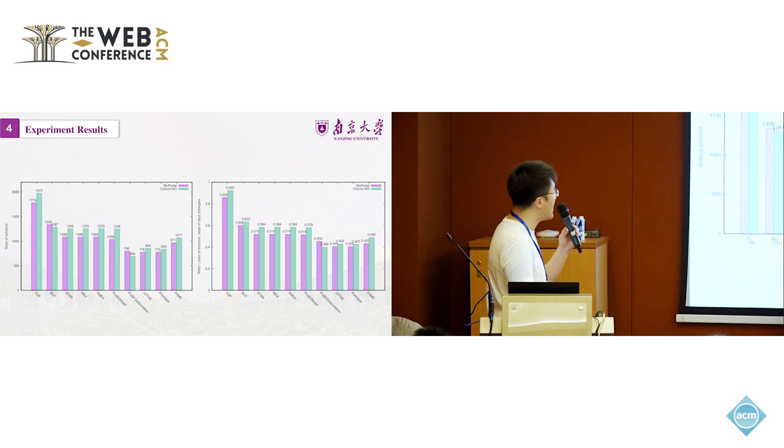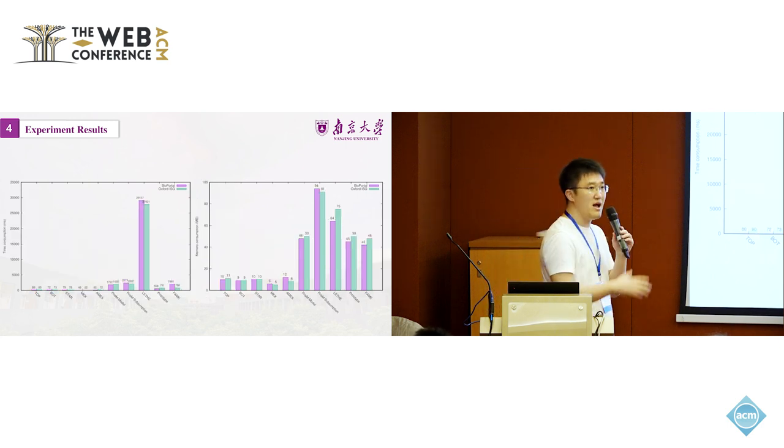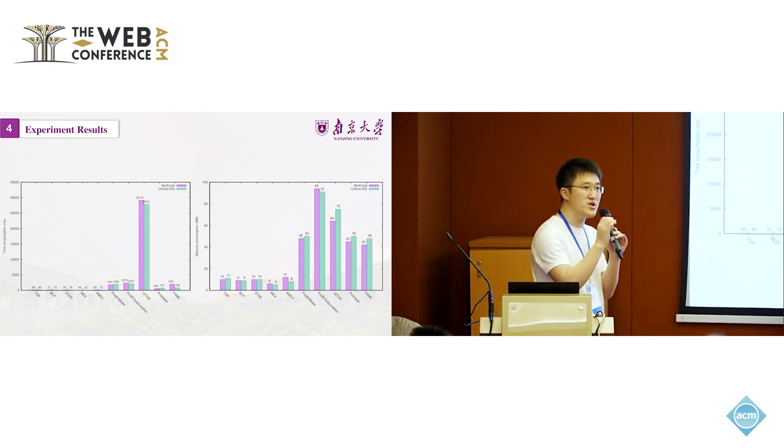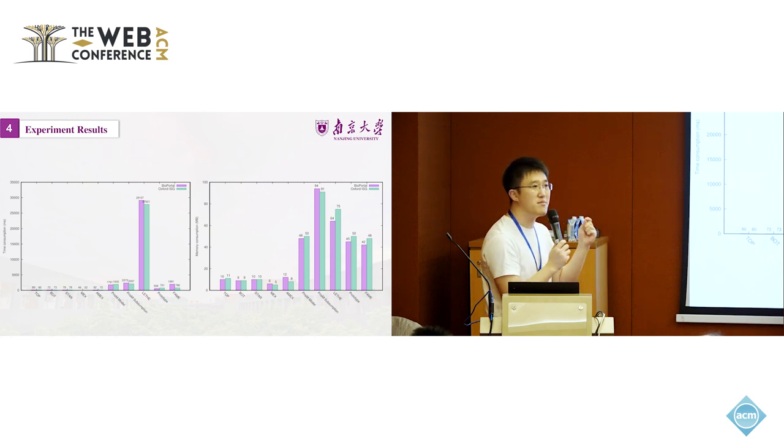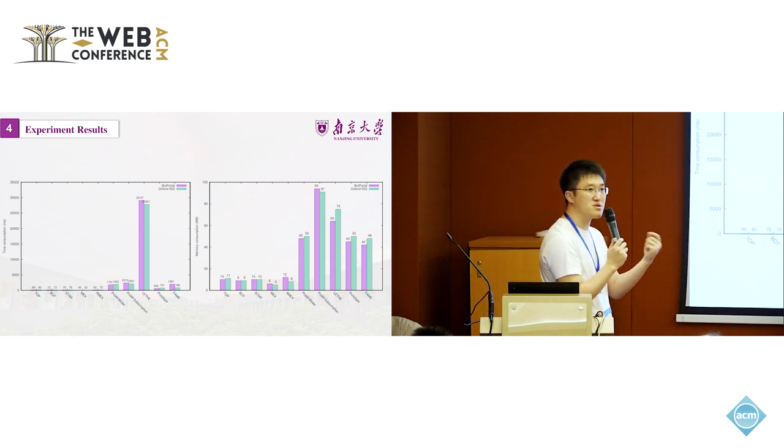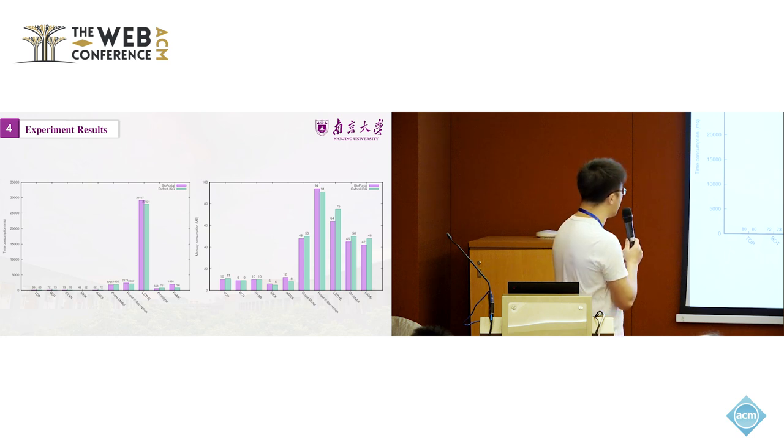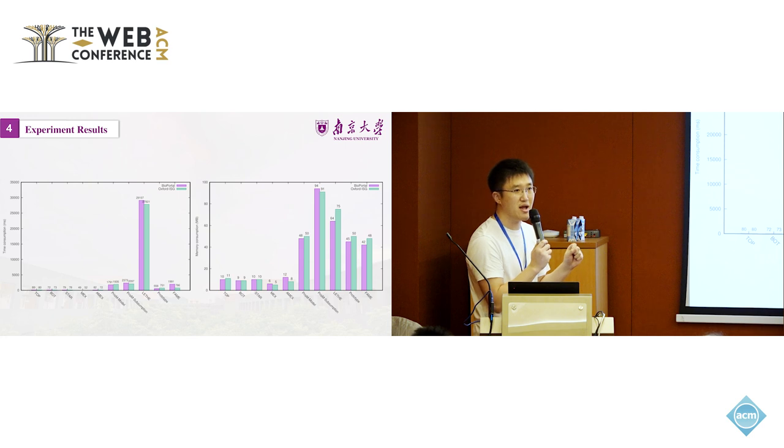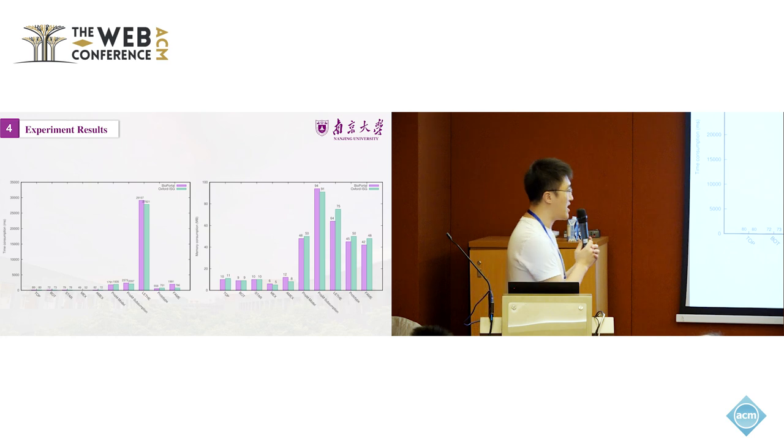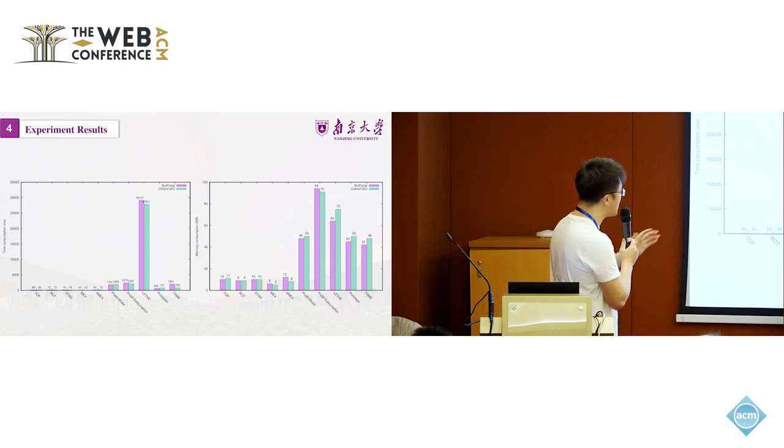We have done another interesting comparison with, I presume some of you have known about modularization, which is another technique for extracting parts of ontology, but is computationally easier than our technique, which is called forgetting. Top, bottom, star, max, amax, these are the modularization techniques or methods. We compare it to, we have collected all of them on the market. You see, except for Lethe, Lethe is the forgetting method we compare it to.